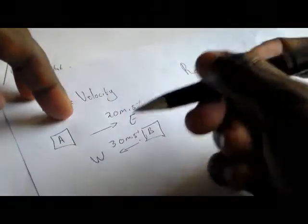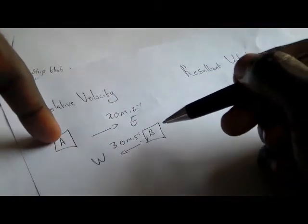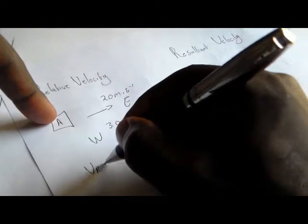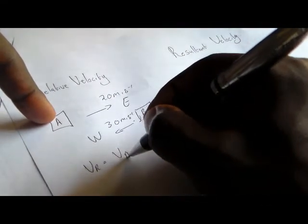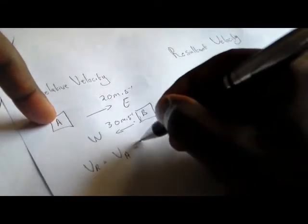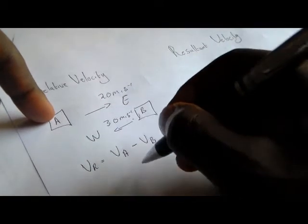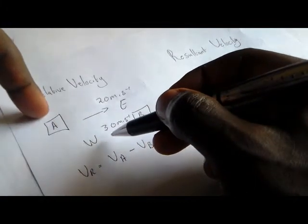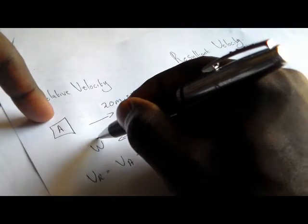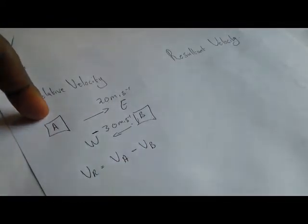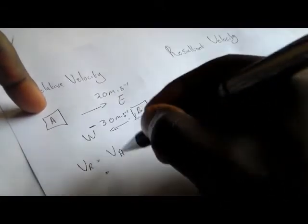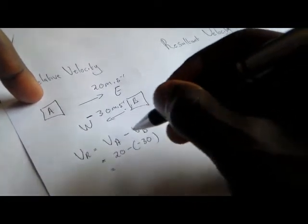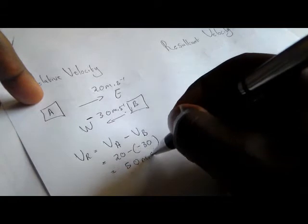When calculating the relative velocity of A relative to body B, the relative velocity is equal to the velocity of body A minus the velocity of body B. Because body B is moving in the opposite direction, it is going to have negative value. So it will be 20 minus negative 30.